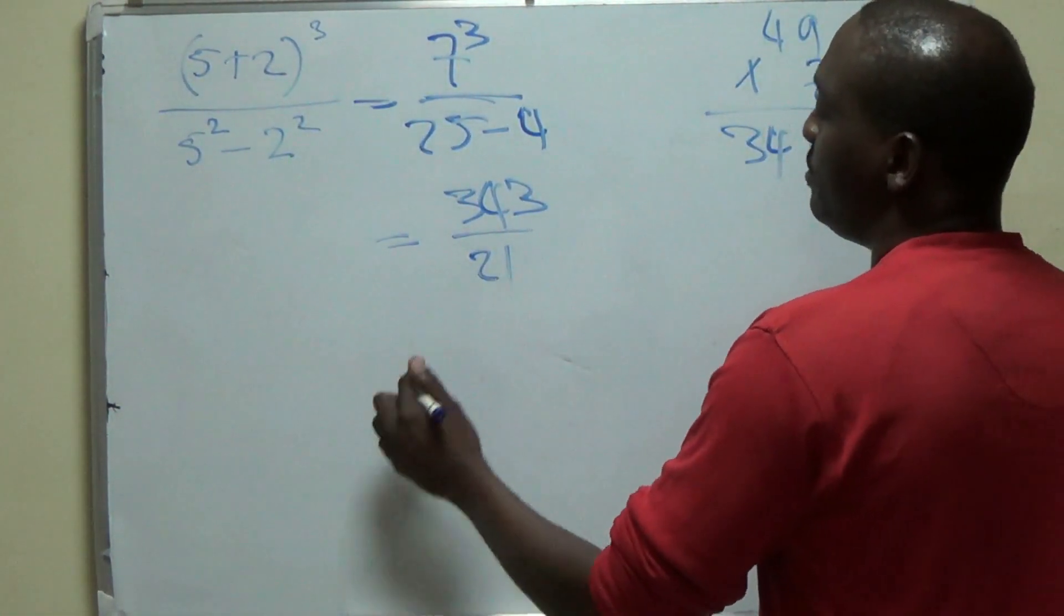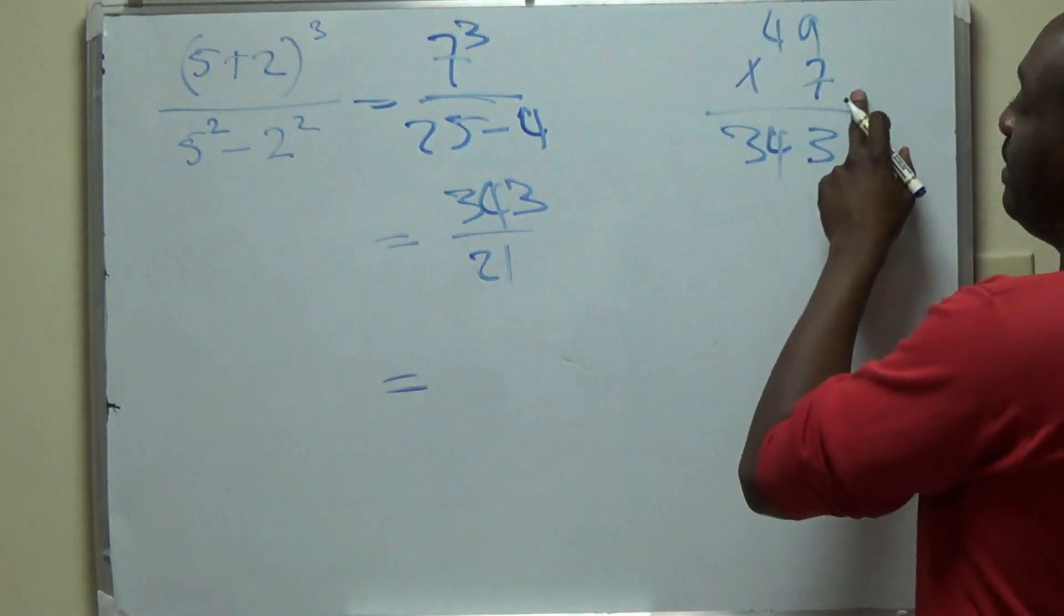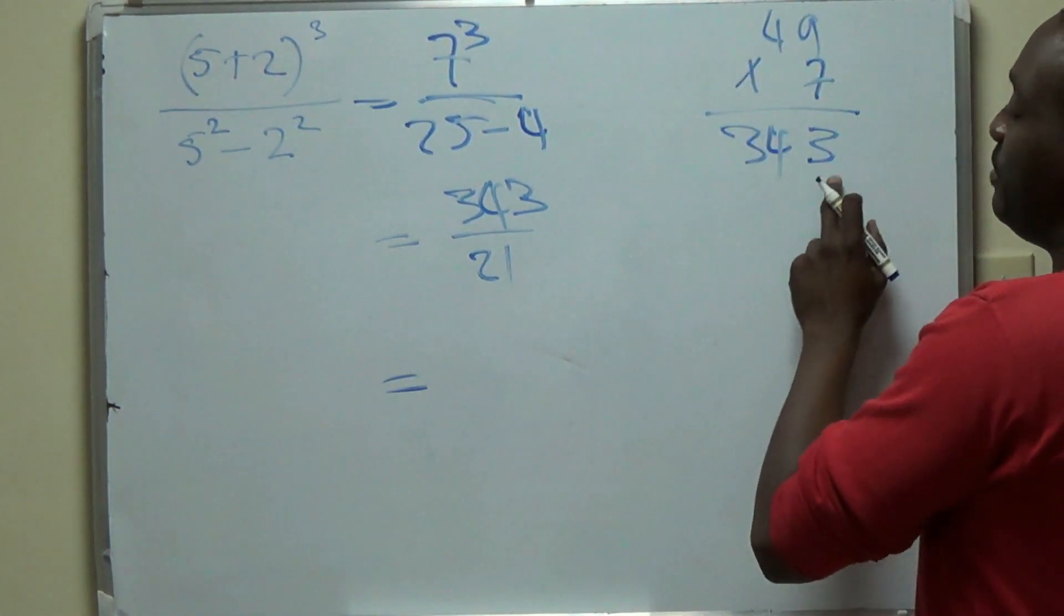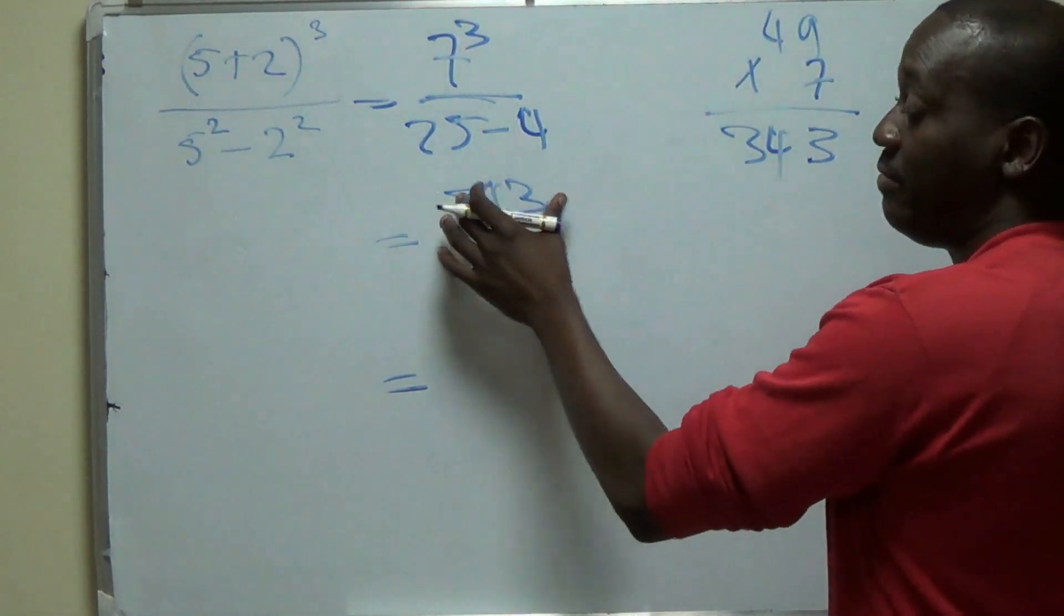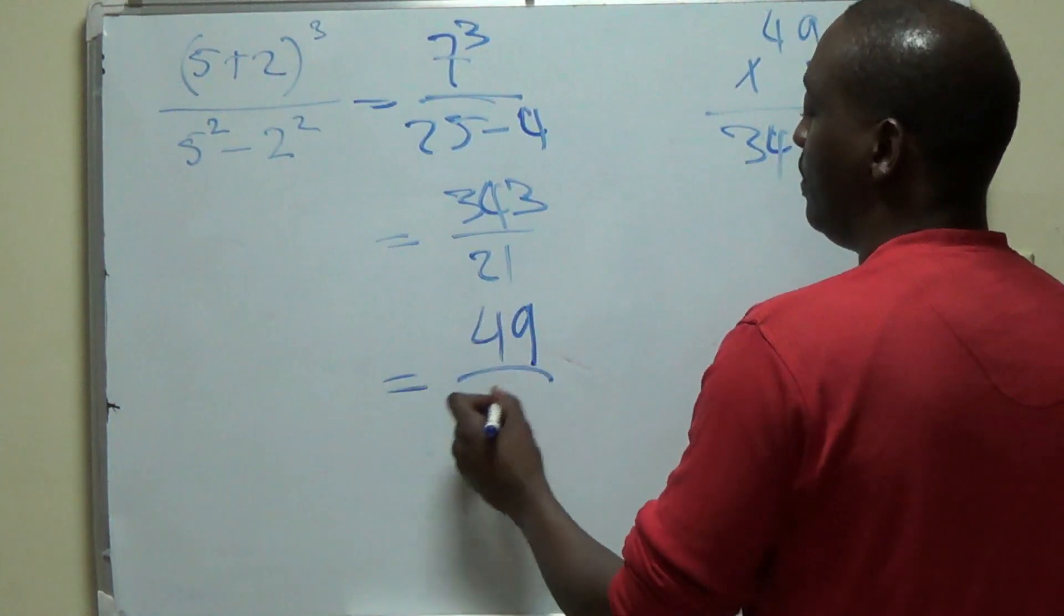So 7 into 21 is 3. We know that from our 3 times tables. And we just multiplied 49 by 7 here to get 343. So 7 into 343 has to be 49. So you'll have 49 here over 3 here.